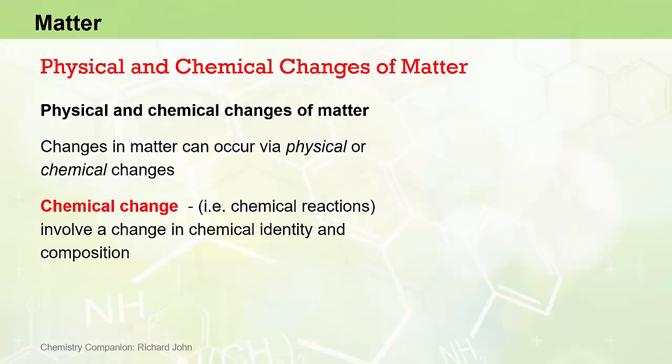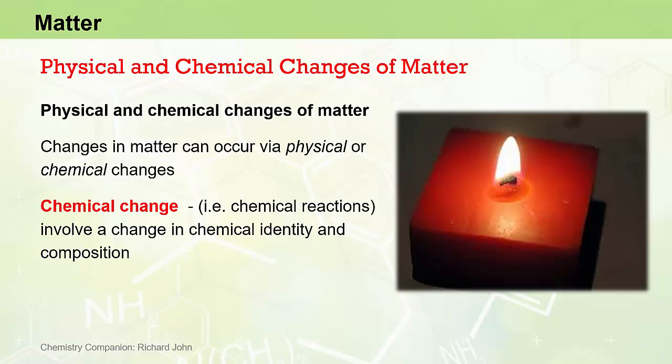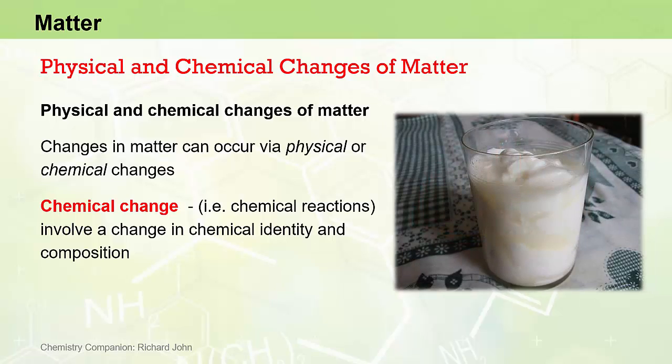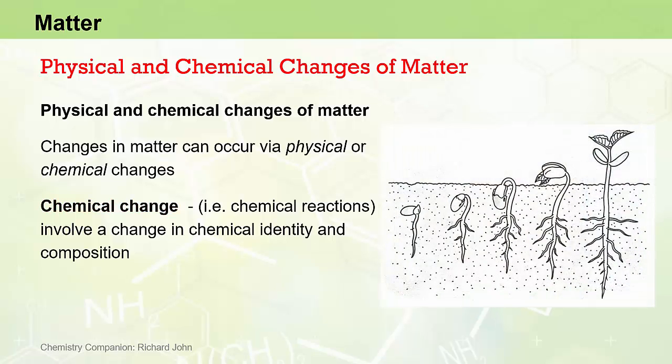A chemical change of matter, otherwise known as a chemical reaction, involves a change in the chemical identity and composition of matter, where one or more kinds of matter are transformed into a new kind of matter. We see the results of chemical reactions around us every day. For example, the burning of a candle, the spoiling of milk, or the growth of plants via photosynthesis are all examples of chemical reactions where new substances are formed.